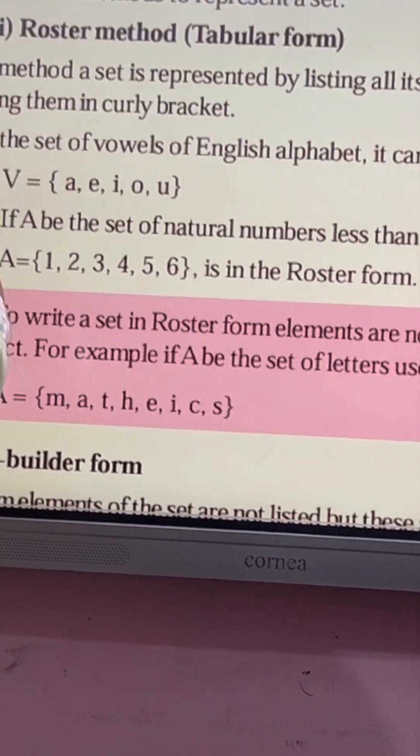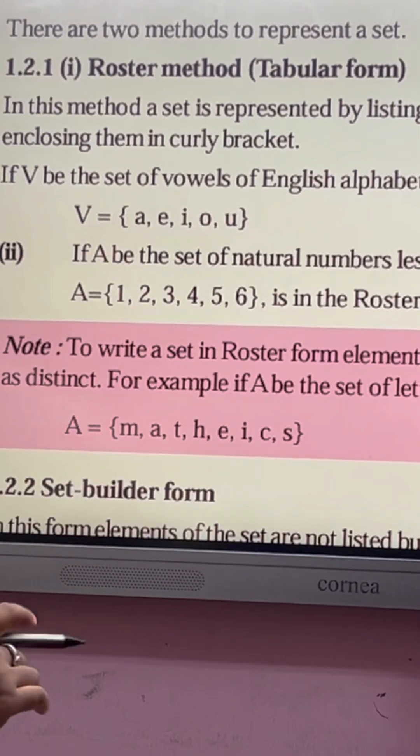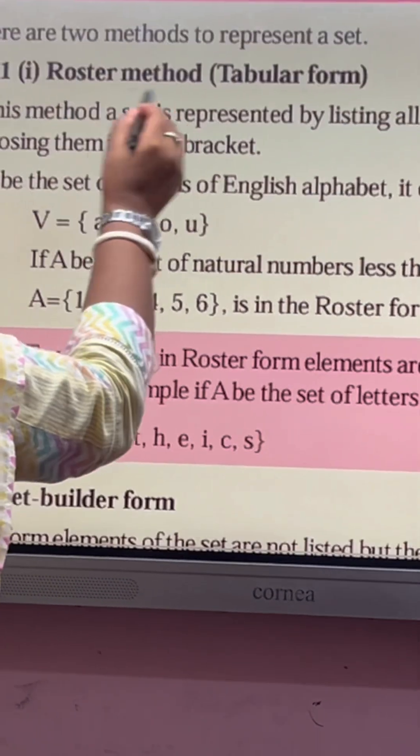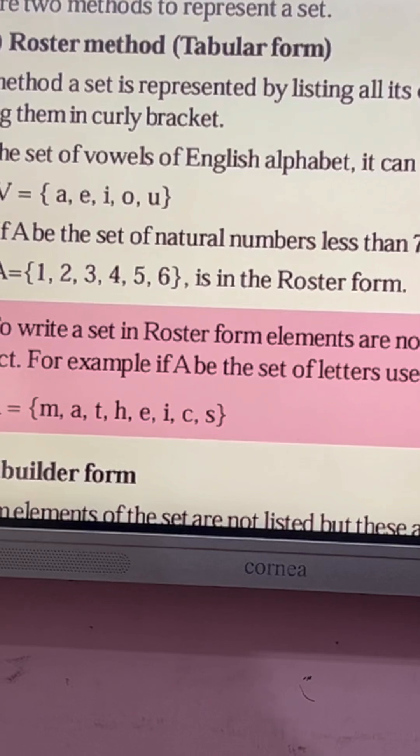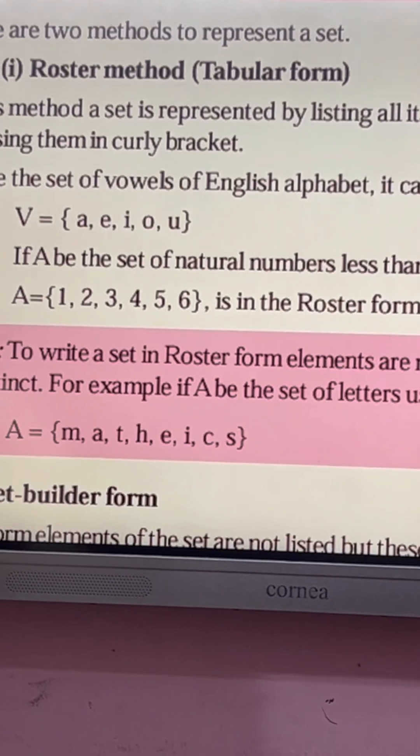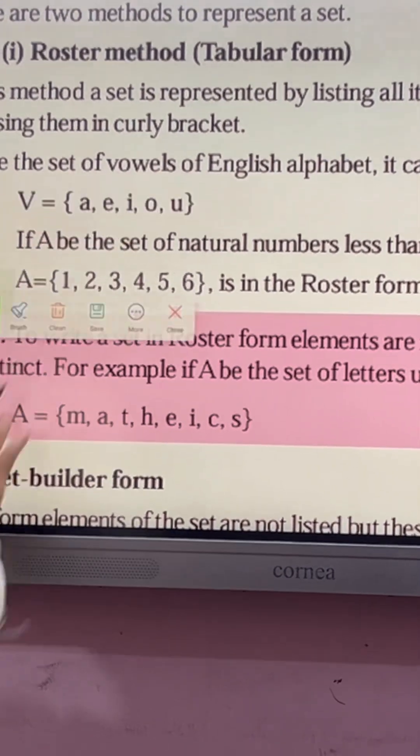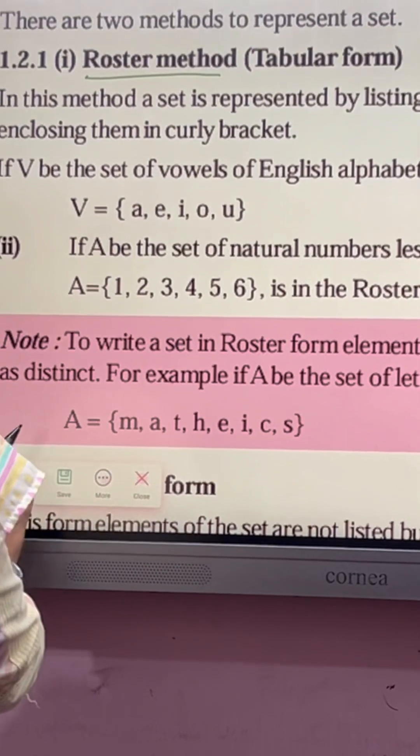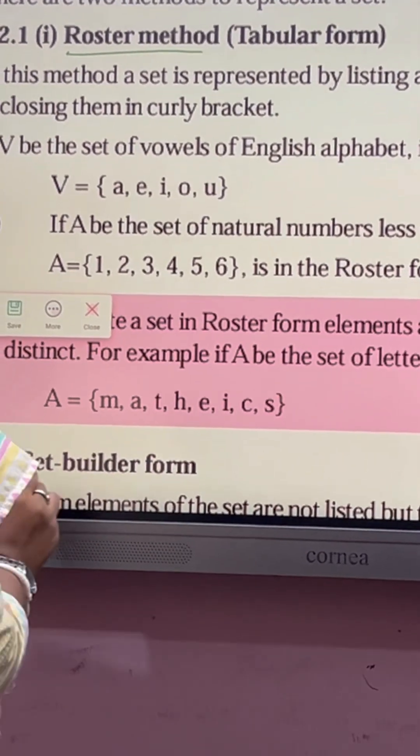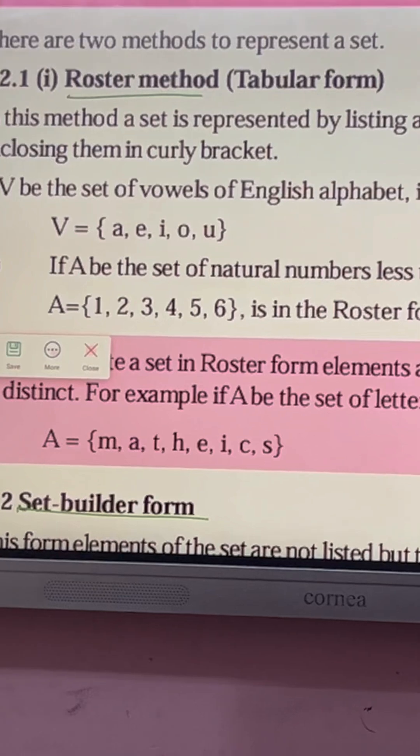Next, how to represent a set? A set is represented by two methods. One is roster, second is set builder method. Roster method and here we have the set builder method. Two forms are there.